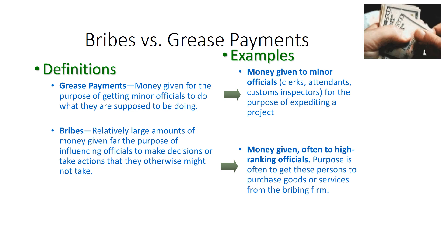Another important problem is that of bribes and grease payments, especially for multinationals — where companies need to provide grease payments to officials to speed up certain projects or transactions. This problem is especially prevalent in developing countries where there may not be appropriate checks and balances. As a global and multinational company, we need to tackle bribery and grease payments, which can affect our image and lead to legal problems if not handled effectively.